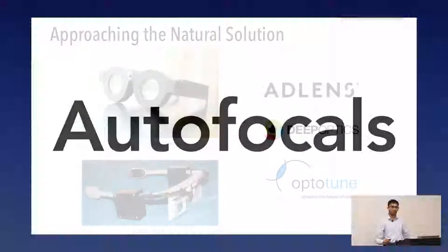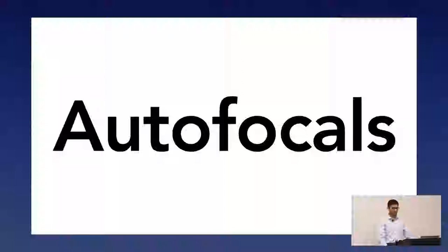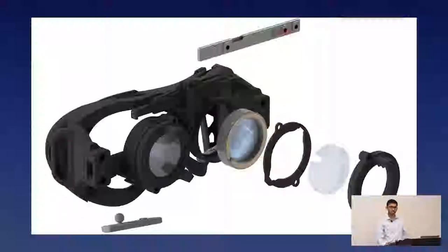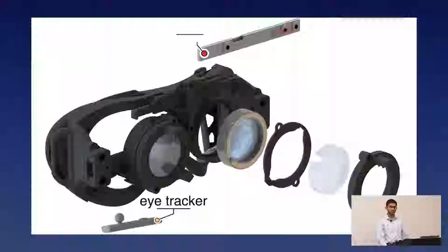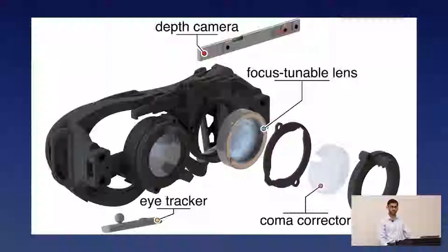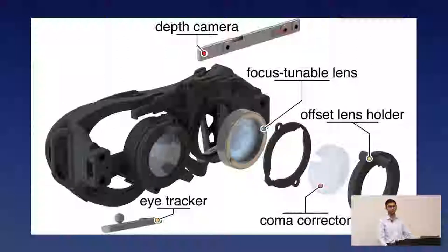What we want to do is something we're calling autofocals. It looks like a VR headset because it uses a lot of the same VR optics, but the idea is that we use an eye-tracker to measure where your eyes are, a depth camera to measure the world, and we use both together to update focus-tunable lenses. These lenses change their focal length using a liquid membrane on the inside. That liquid membrane is affected by gravity, so we have a coma corrector to adjust for that, plus an offset lens holder to account for individual prescriptions.